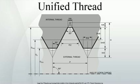UTS threads do not usually use a pitch parameter. Instead a parameter known as threads per inch is used, which is the reciprocal of the pitch. The relationship between the height h and the pitch P is found using the following equation.